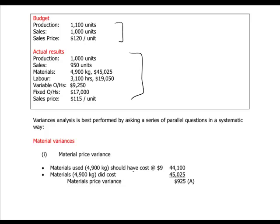For materials price variance, you always use the actual quantity of the materials when discussing prices. The materials that did cost that amount given to you — that was $9. You can read that this is an adverse variance because we actually paid more for our materials than we should have.